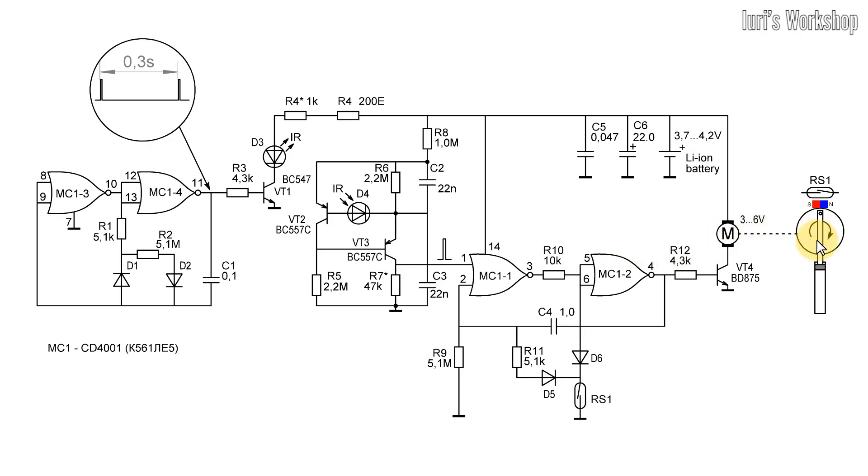When the piston reaches the upper position, the reed switch closes, which, through the diode D5, resets the timer, and through D6, maintains the rotation of the motor until the reed switch contacts open again.